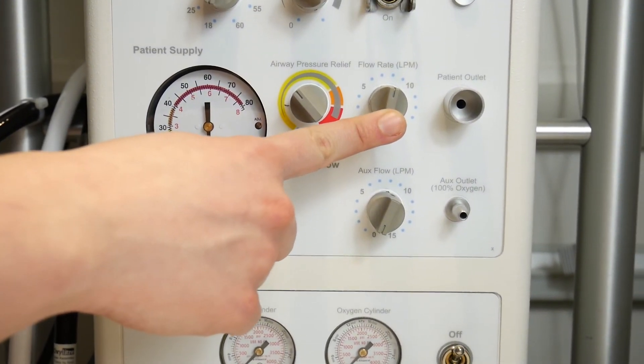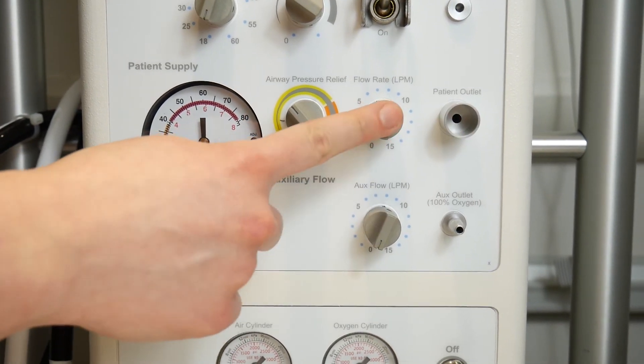This dial controls the flow rate through the gas outlet. Most people set it at 8 liters a minute.